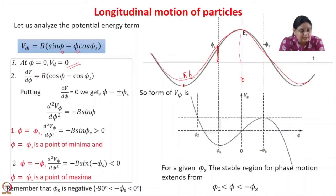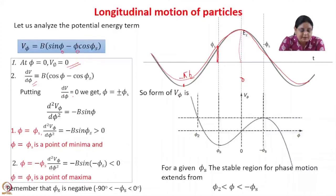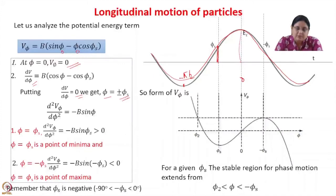Let us differentiate V(phi) with respect to phi. We get b times (cos phi minus cos phi_s). Putting dV/d(phi) equal to 0, we get phi equal to plus or minus phi_s. So phi equal to plus or minus phi_s are points of maxima or minima.